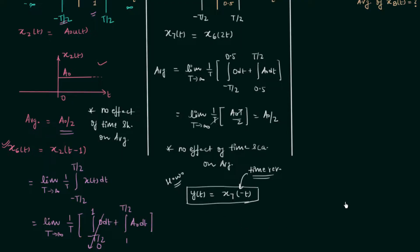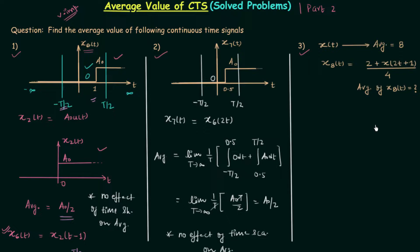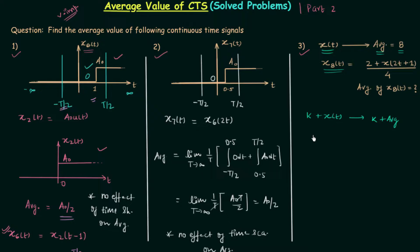Now we move to the last problem. The problem states that signal x(t) has average value equal to 8, and signal x8t = 2 + x(2t + 1) / 4. Before solving, note that if you add a constant k to a signal x(t), the average value also has k added to it, giving k plus the average. And if you multiply a signal x(t) by a constant k, the average value is also multiplied by the same k.